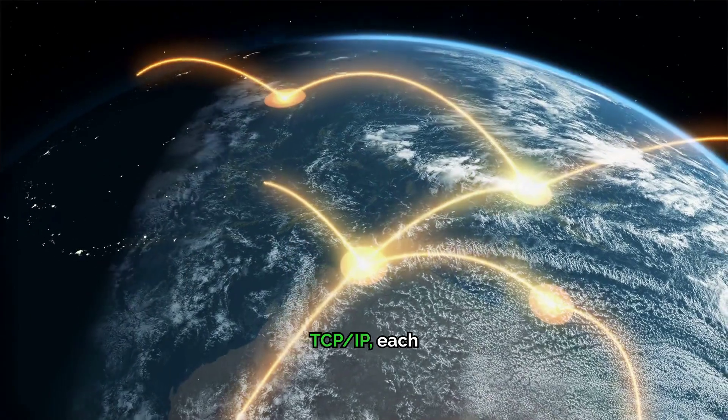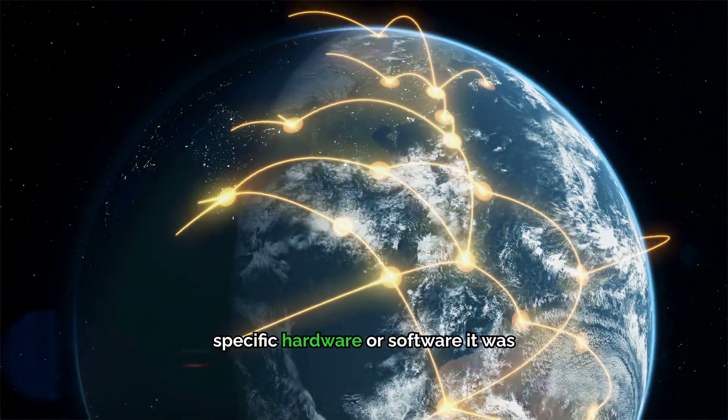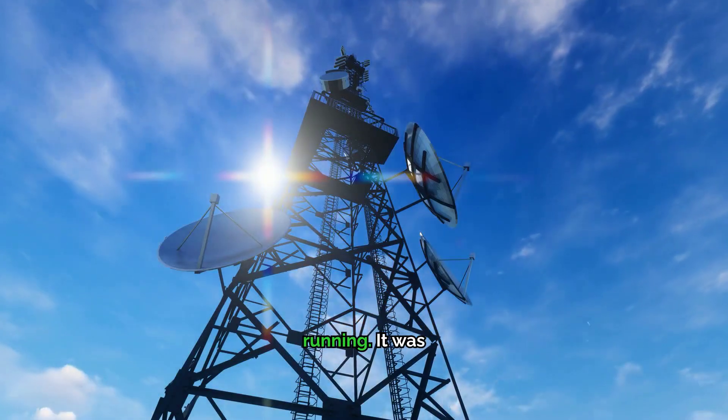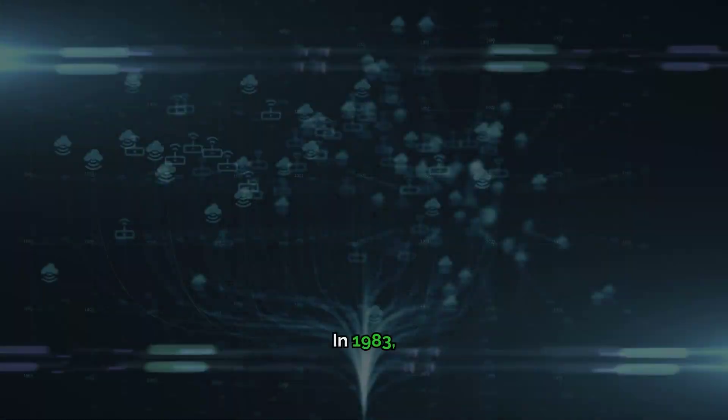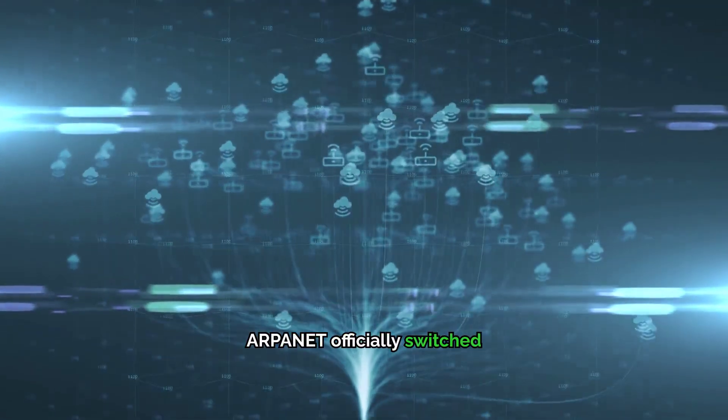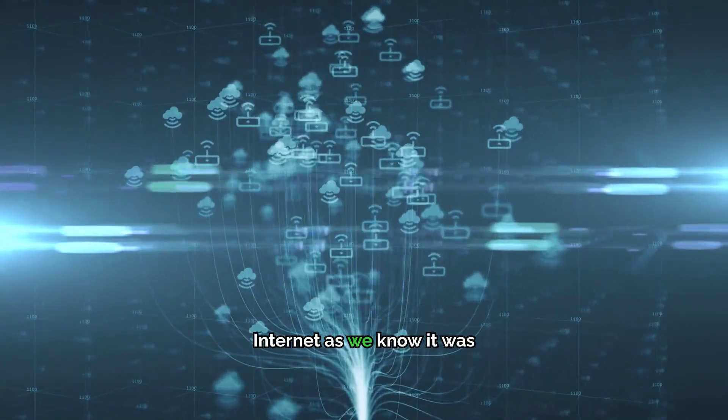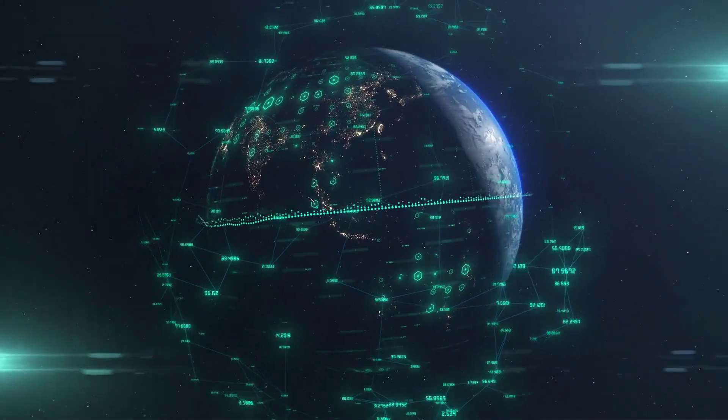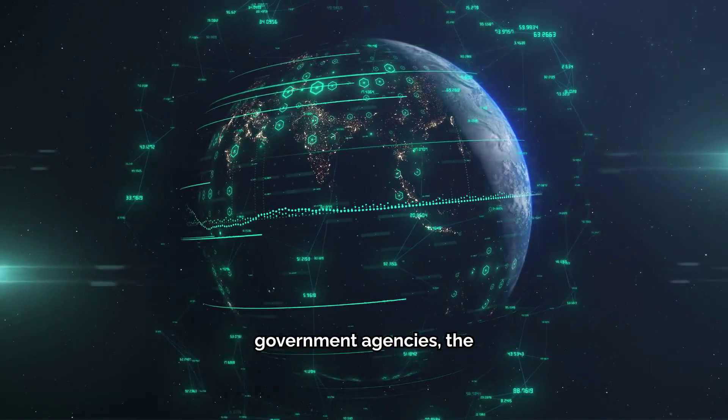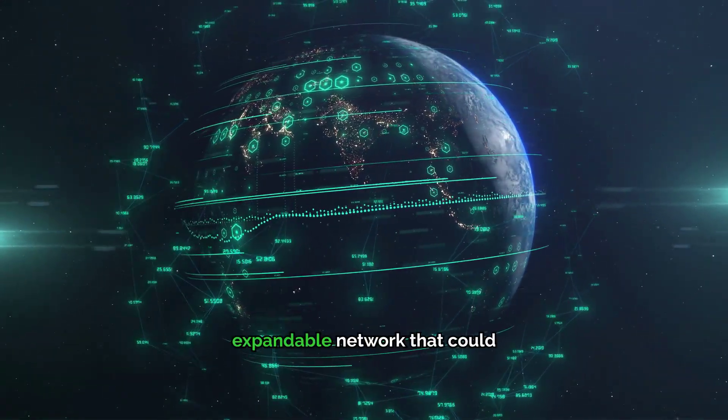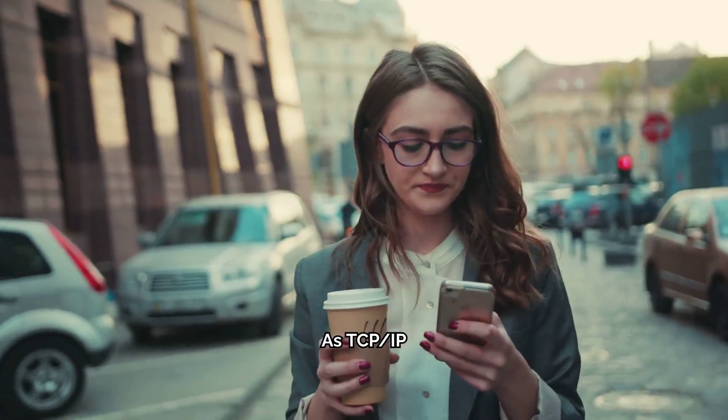With TCP/IP, each computer could send and receive information, regardless of the specific hardware or software it was running. It was a universal translator for digital communication. In 1983, ARPANET officially switched over to TCP/IP, and this is the moment when the Internet as we know it was born. No longer a network limited to a few universities and government agencies, the Internet was now an open, expandable network that could connect people across the globe.